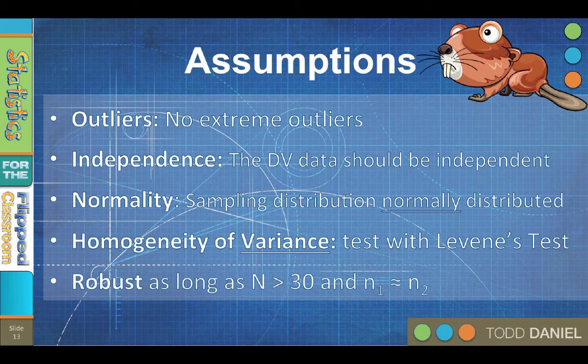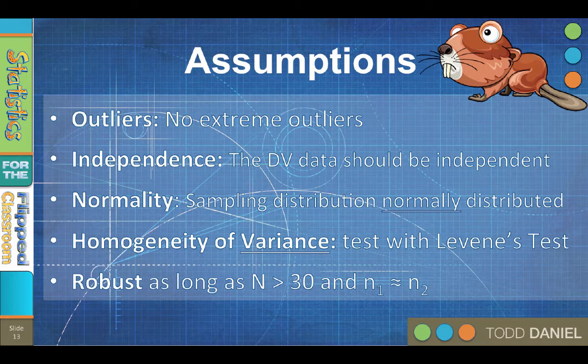Now the upshot of all of this is that the independent samples t-test is robust. Robust means that the type 1 error rate does not increase if the assumptions are violated. The independent samples t-test is robust to violations of normality or homogeneity, as long as there is a minimum of 30 subjects in each sample group.